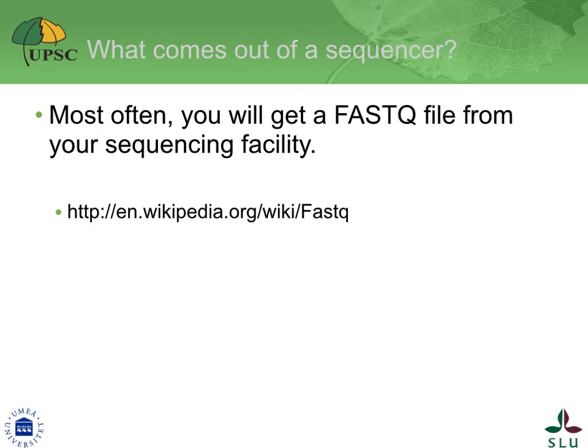These sequences are called colloquially reads. In the FastQ file, a read's information is reported over four lines. The first line contains the read identifier. The second line contains its nucleotide sequence. The third line is historical and has no content but a plus sign.